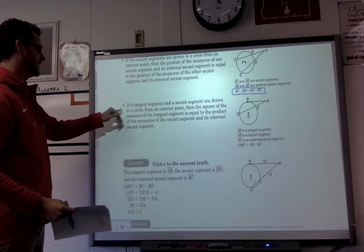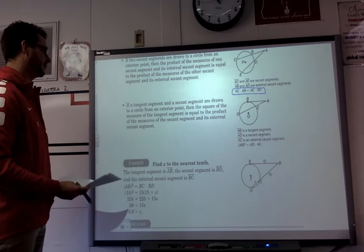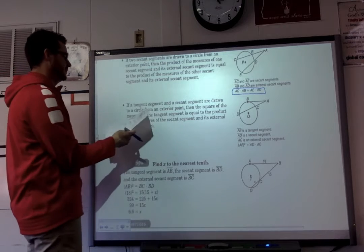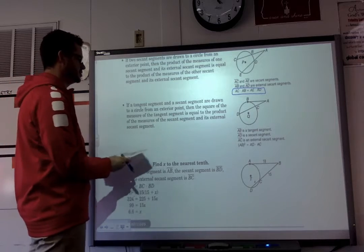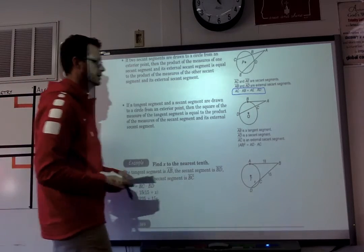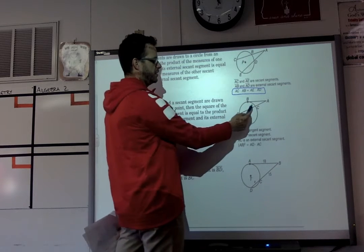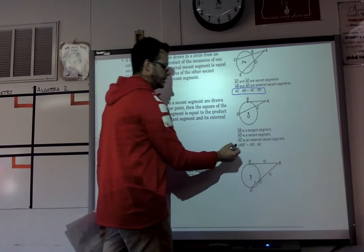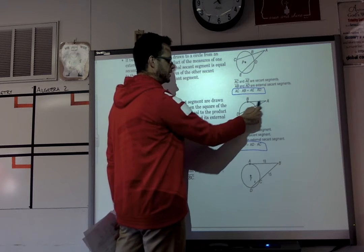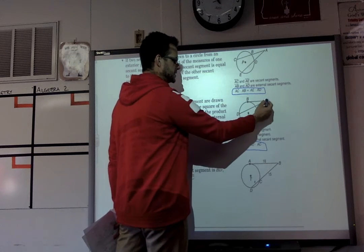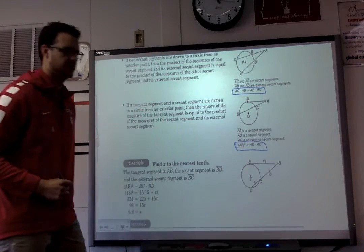If a tangent segment and a secant segment are drawn to a circle from an exterior point, then the square of the measure of the tangent equals the product of the measure of the secant and its external segment. So the tangent squared — AB squared — equals the entire secant AD times its external portion AC. Let's walk through some examples and see if this makes a bit more sense.